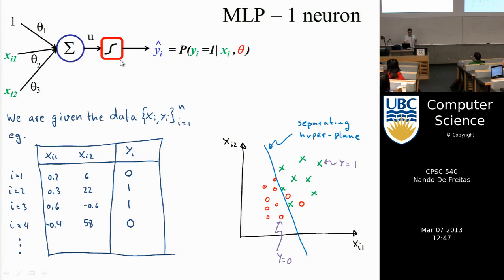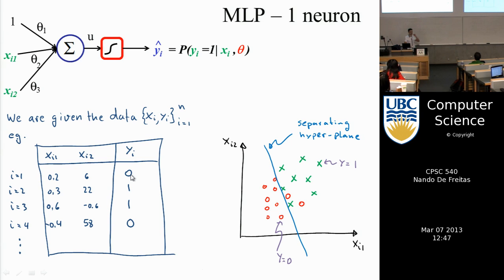The setup: we are given data in a supervised setting consisting of (x, y) pairs where y is binary. The x inputs can be continuous or categorical — since we're not modeling x, this isn't a problem. If we plot x1 versus x2, each data point appears as a point in 2D, with red indicating y=0 and green indicating y=1.